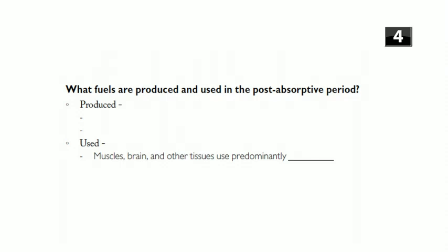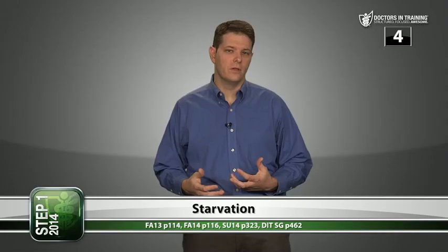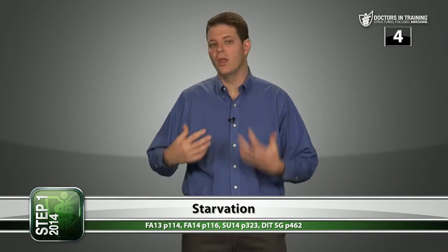Question four: what fuels are produced and used in the post-absorptive period? At this point there are really just two fuels being produced: glucose from hepatic glycogenolysis and gluconeogenesis, and fatty acids from adipose tissue. Fatty acids stored in adipose tissue represent another form of energy storage beyond what's stored in the liver.